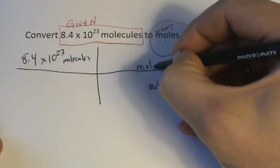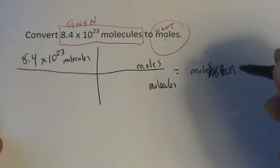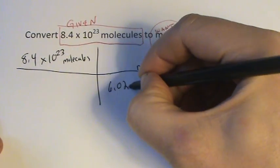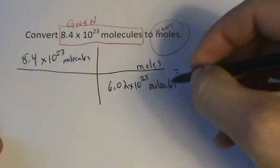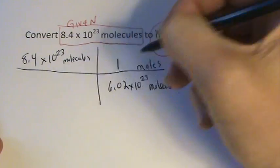So it'll have to be moles up here, and then I'll need molecules down here, so these will cancel out. This will be moles. So I happen to know that there are 6.02 times 10 to the 23rd, that's that Avogadro's number, molecules in one mole.